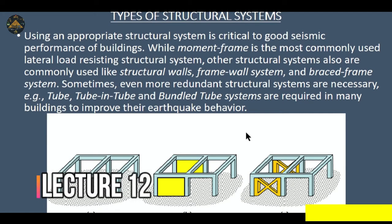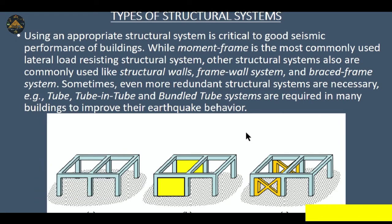For high-rise buildings, we devise special types of structural systems rather than using the traditional beam-column or beam-column-slab system. We employ various types of structural systems just to decrease the lateral deflection and to stabilize the whole structure. Using an appropriate structural system is critical to good seismic performance of the building.